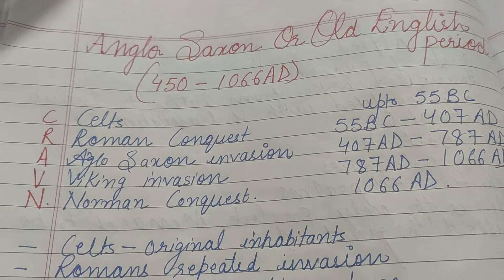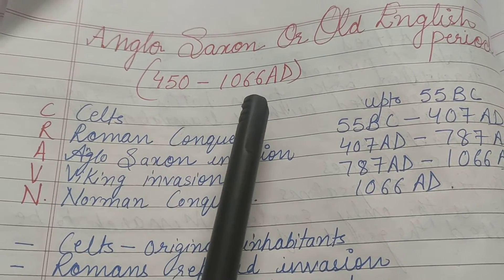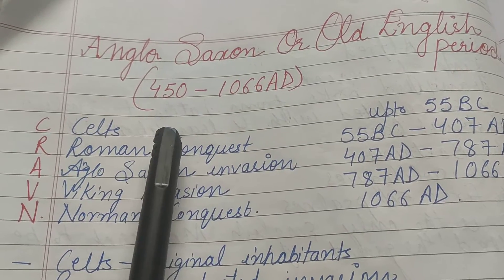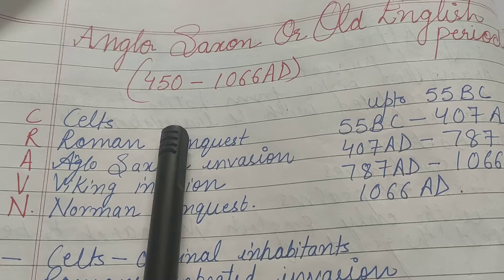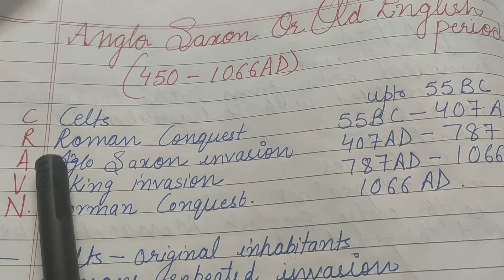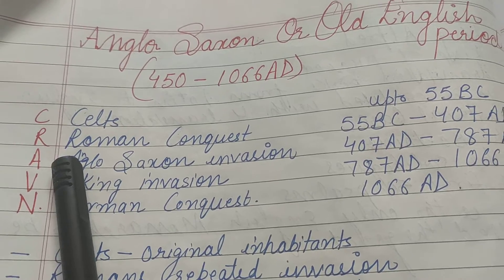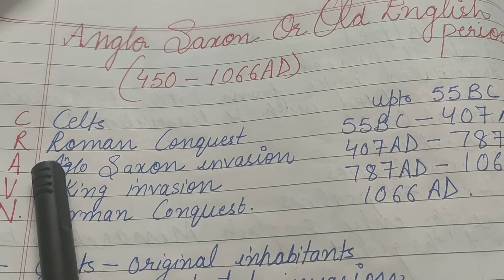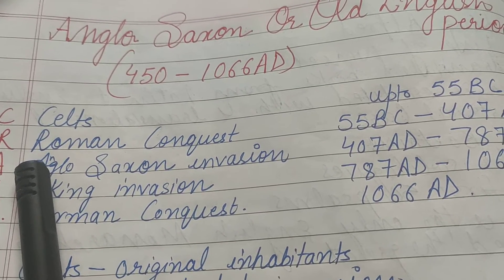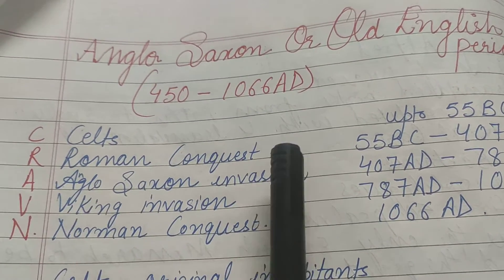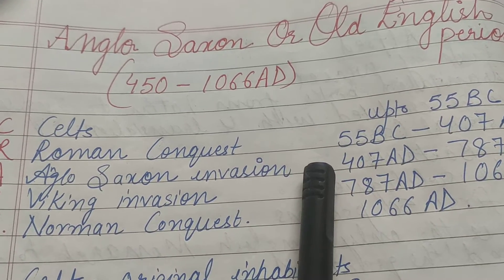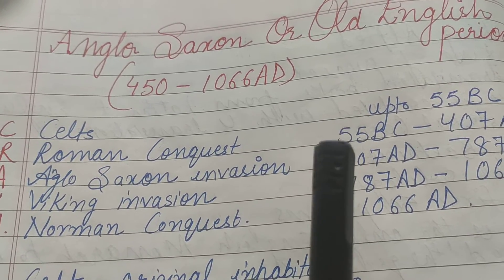Anglo-Saxon period shuru hua tha 450 AD mein aur khatam hua tha 1066 AD mein. 450 AD is a very important period, because in this year Germanic tribes — Angles and Saxons — Britain ki land par aaye aur wahan par unhone kabja kar liya aur wahan par settle ho gaye. 1066 mein Anglo-Saxon period khatam hota hai with Norman Conquest, jisko Battle of Hastings bhi kaha jata hai.